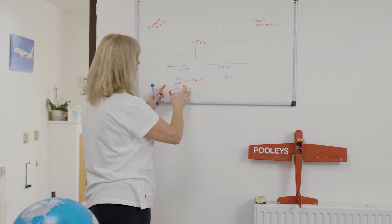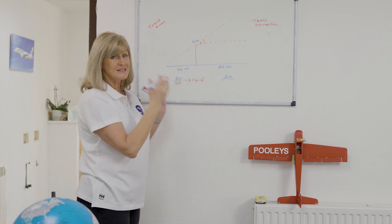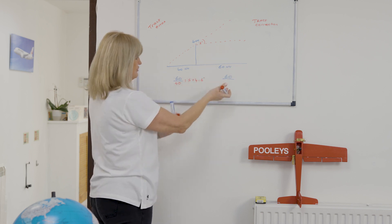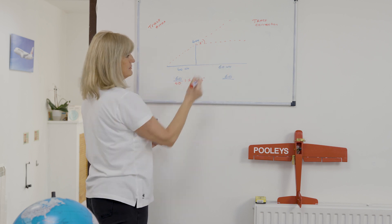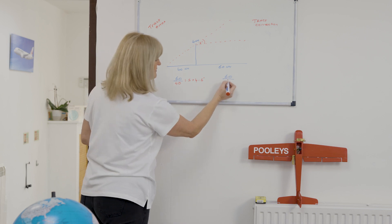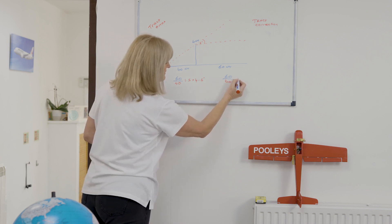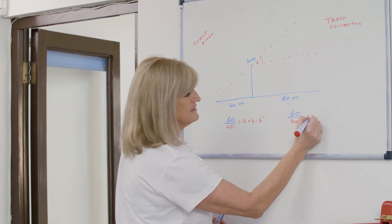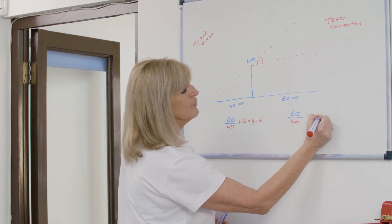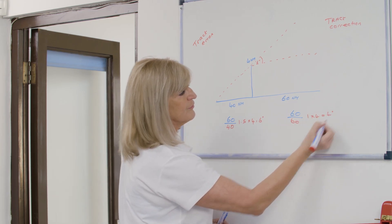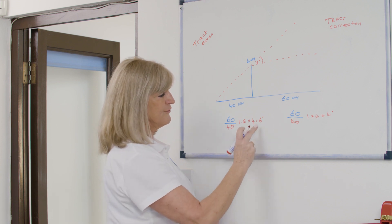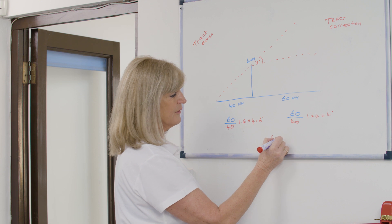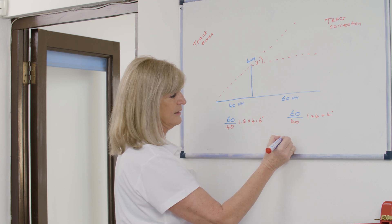The second calculation is called Track Correction. If I now turn my aircraft 6 degrees to the right, all I'm actually going to do is start tracking parallel — I've only corrected the track error angle. So on this side, I have to do exactly the same with what I've got left. It just so happens I've got 60 nautical miles remaining. 60 divided by 60 is 1, times 4 equals 4 degrees.